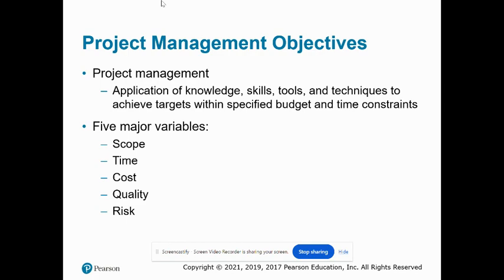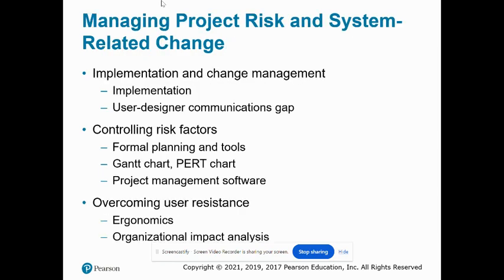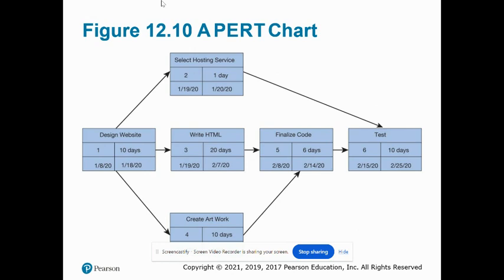Here we look at project management objectives and variables. A great many systems-building projects fail to deliver promised benefits and are over-budget and delayed, often because of poor project management and failure to identify risks beforehand. Management tools like Gantt and PERT charts can help reduce risk and draw attention to areas which are behind schedule or over-budget. This is a simplified PERT chart for creating a small website; it shows the ordering of project tasks and the relationship of a task with preceding and succeeding tasks.